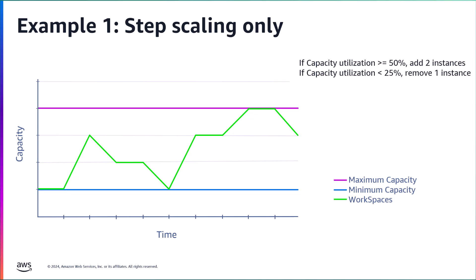In this first example, manual step scaling policies are configured to add two instances when capacity utilization is at or equal to 50% and to remove one instance when capacity utilization falls below 25%. The minimum and maximum capacity values are set and not modified by any scaling policy actions and are represented by the purple and blue lines. The number of workspaces in the pool are then represented by the green line. At the start, the pool is at a steady state with the number of workspaces in the pool equal to the minimum capacity value. The assumption is that there are no users on the pool at this given time.